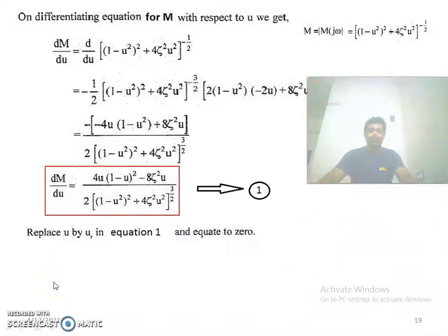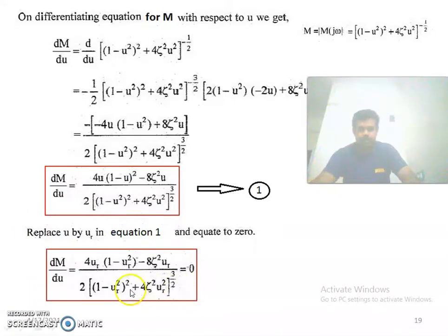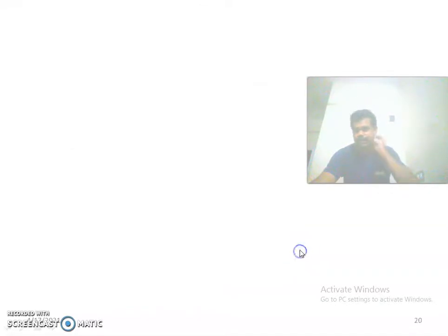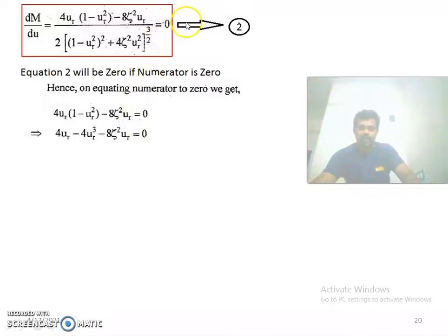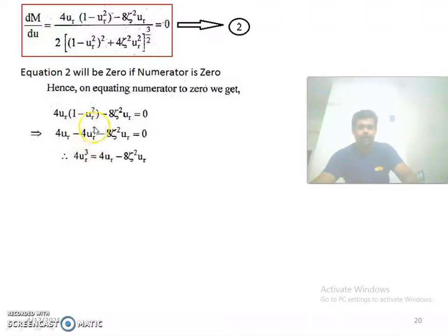Replacing u by ur in equation 1 and equating to zero, the denominator is eliminated by cross multiplication, leaving only the numerator equal to zero (equation 2): 4ur - 4ur³ - 8ζ²ur = 0. Rearranging: 4ur - 8ζ²ur = 4ur³.